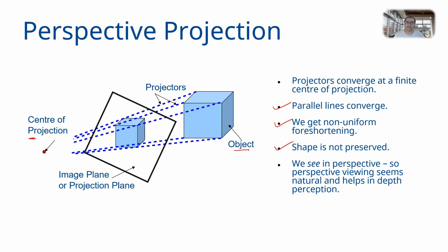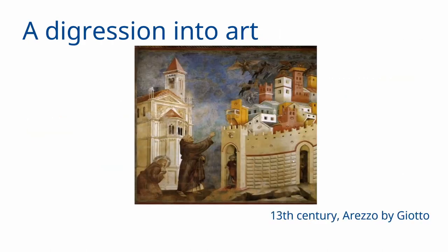It is a very interesting study to see how perspective developed in illustration, art, and architecture. We begin our digression into art by looking at a 13th century painting by Giotto — a painting of the city of Arezzo. There is some notion of perspective in this painting but it is not quite there yet. Objects do tend to become smaller as you recede into the distance — the towers and houses become smaller — but parallel lines in the image remain parallel.